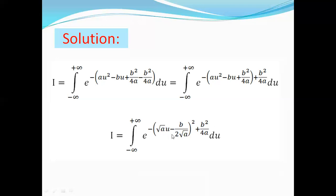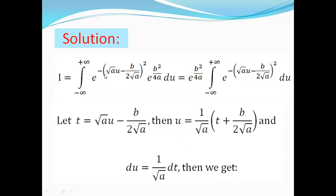Then we will distribute the two powers over e to get e to the power of this term multiplied by e to the power of the second term. So I becomes e to the power minus (√a · u minus b/(2√a))² multiplied by e to the power b²/(4a). Since this is a constant, I becomes e to the power b²/(4a) multiplied by the integral from minus infinity to plus infinity of e to the power minus (this term)² du.